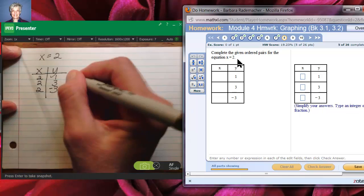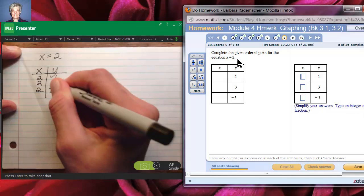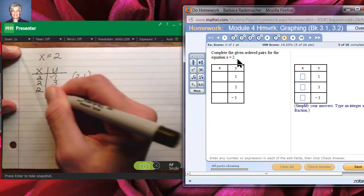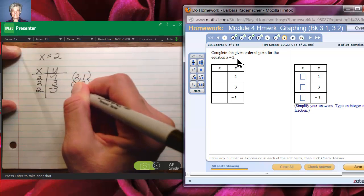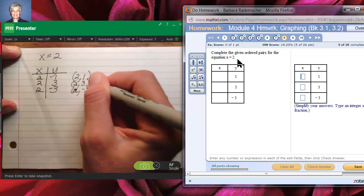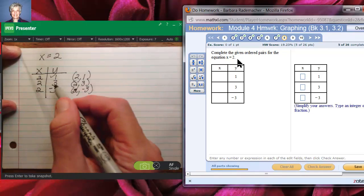So, this point is going to be (2, 1). This point, (2, 3). This point, (2, negative 3). And all three of these points are on this line.